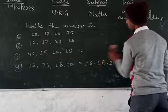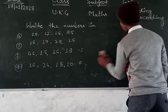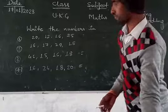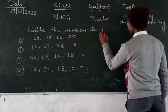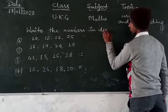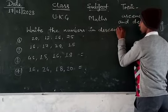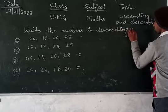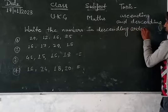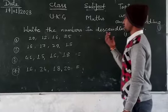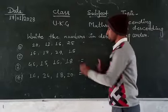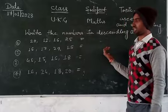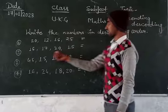Now we look at each example again. First we identify the lowest number, then we arrange from smallest to biggest.